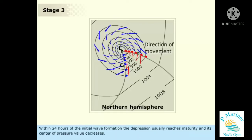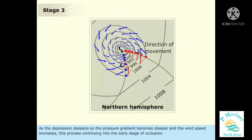Within 24 hours of the initial wave formation, the depression usually reaches maturity and its center pressure value decreases. As the depression deepens, the pressure gradient becomes steeper and the wind speed increases, this process continuing into the early stage of occlusion.